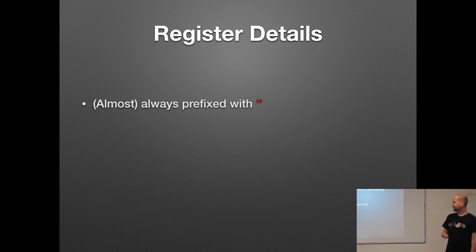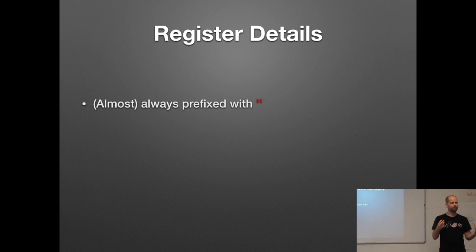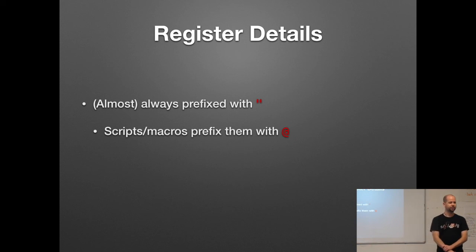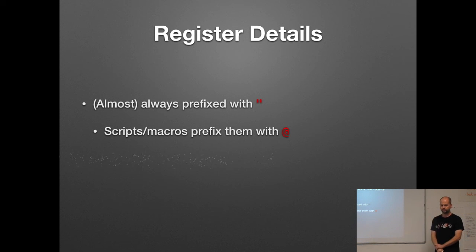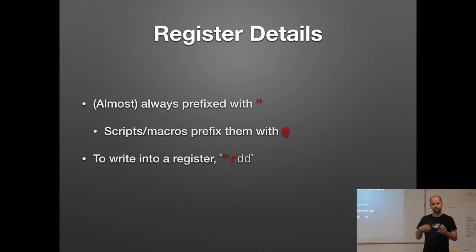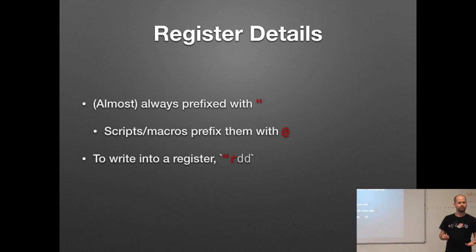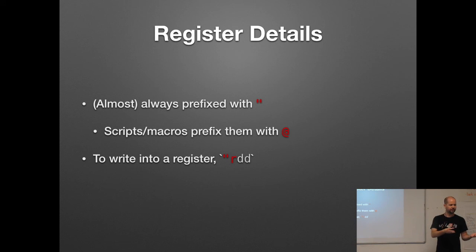Registers, as they are written, are prefixed with double quote characters, unless you're doing scripts or macros, in which case you prefix them with an at sign. Generally speaking, when the VIM documentation refers to registers, it will prefix them with quotes. To write into a register — to put text into a register — you simply prefix a command like delete or yank with a double quote to signify a register, then you name the register. For example, this would be the R register, so we would delete a line and put it into the R register. This is done in Normal mode.